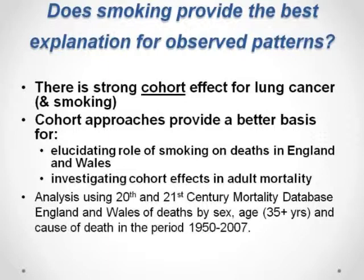Does smoking explain the patterns we've seen in Britain in the 20th century? There is a strong cohort effect for smoking — it takes 30 to 40 years for the effects of smoking to be translated through into mortality. The peak in smoking and the peak in smoking mortality tend to be a long time apart. So it's really looking at smoking patterns well in the past that will determine current levels of mortality, and it is the cohort's early experience that determines their mortality.